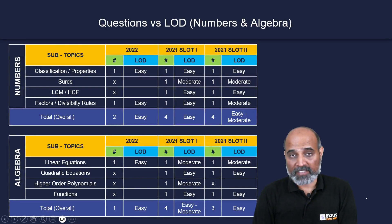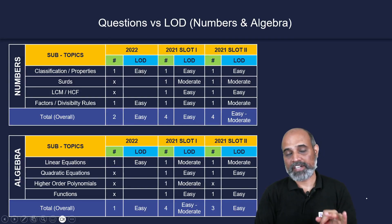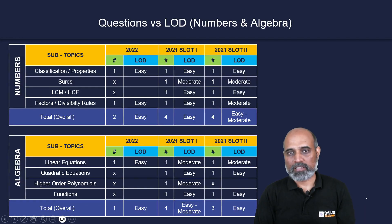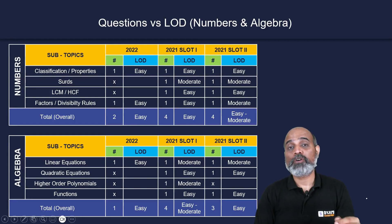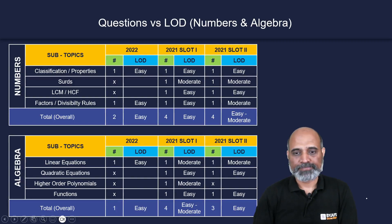Looking at algebra: questions came from four types — linear equations, quadratic equations, higher-order polynomials, and functions. In last year's CMAT, there was only one question, from linear equations, and it was easy. In 2021 slot one, there was one question from each of the four types, with overall easy to moderate difficulty. In slot two, there was no question from higher-order polynomials; questions came from linear, quadratic, and functions, with an overall easy difficulty level.